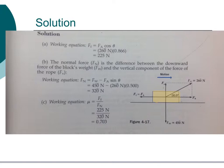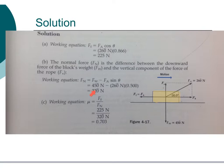Next, we determine the normal force. The normal force equals the weight of the box minus the force of the rope times the sine of the angle. The box weighed 450 N, the rope force was 260 N, and the sine of 30 is 0.5. We get the vertical component as 320 N.